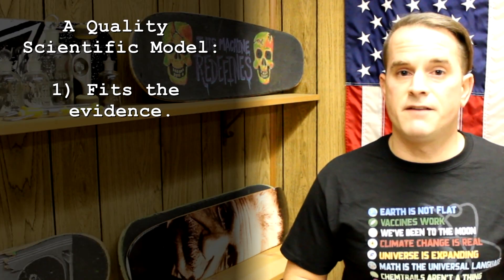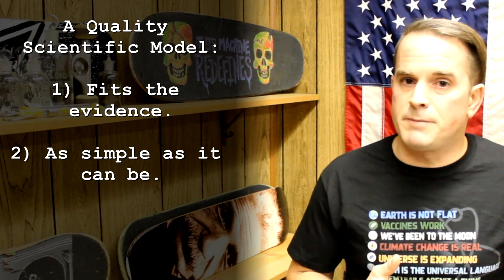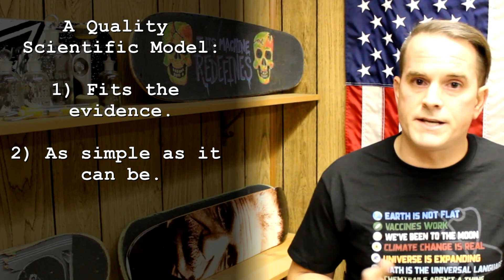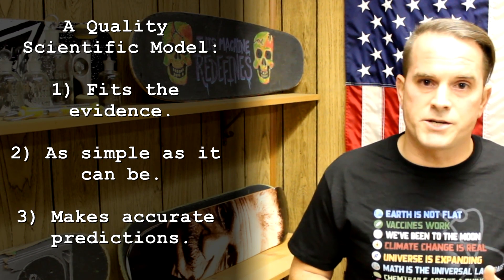Alright, are you up to speed? We've done a quick crash course on the two different models and how they explain the seasons. What makes a model a good one — a successful one? I bring up three major criteria. Number one, the model must fit the evidence. Second, the model is as simple as it can be — nothing extra that doesn't need to be there. And third, the model can make accurate predictions.